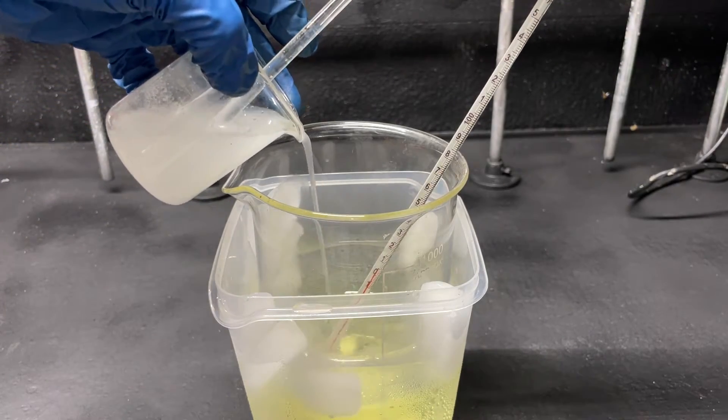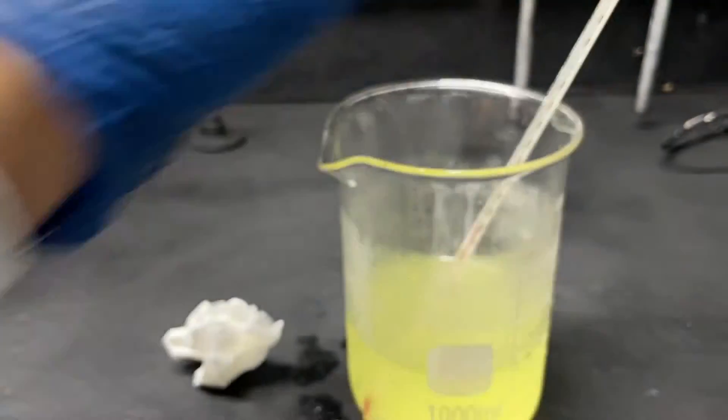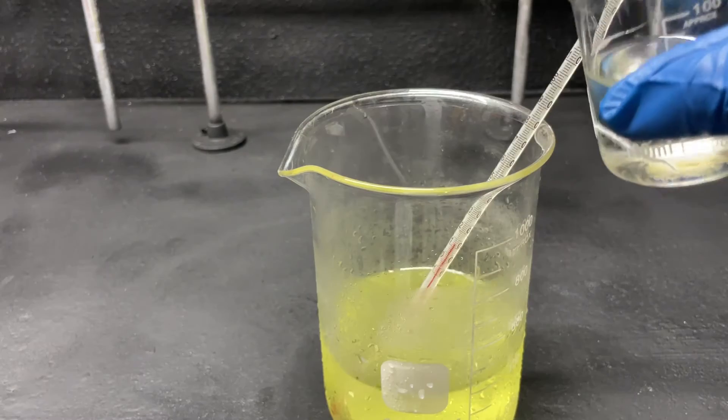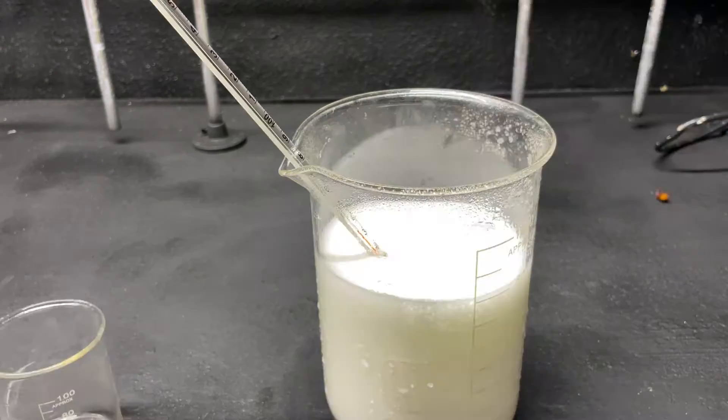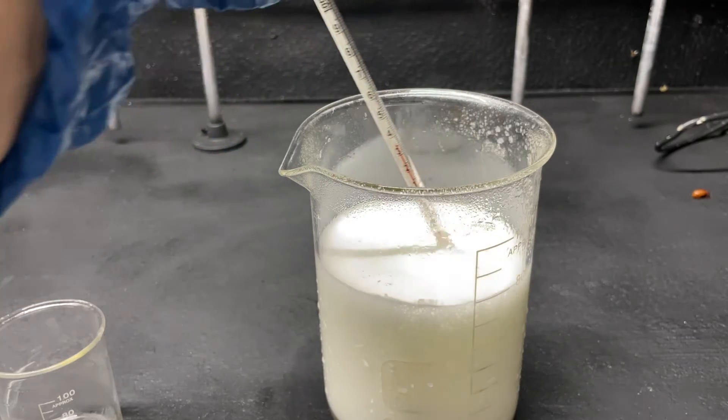Now that our solution has cooled back down, we can add our urea gelatin solution. We now have hydrazine forming in our solution, and as you can see, this step is accompanied by a lot of foam.